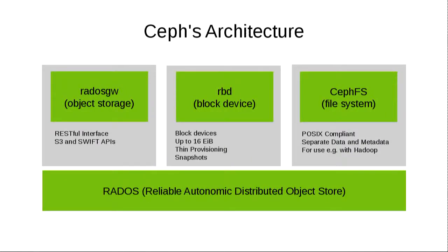Architecturally, it looks like this. At the bottom you've got RADOS — Reliable Autonomic Distributed Object Store. That's the cluster. On top of that you've got RADOS Gateway, which you can talk to via S3 or Swift APIs. RBD for RADOS block devices — they're thin provisioned, they support snapshots, they're huge. You can mount them with Linux kernel drivers or user space. One of my colleagues at SUSE created LRBD, so you can export these as iSCSI targets as well if you've got Windows or other clients.